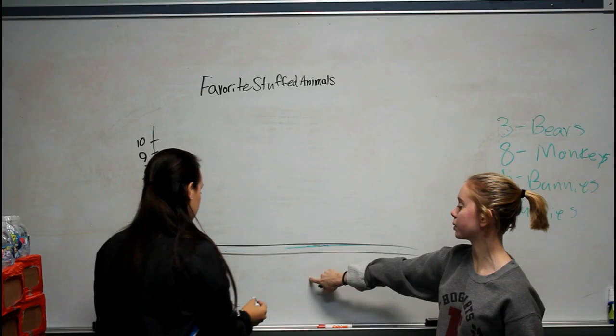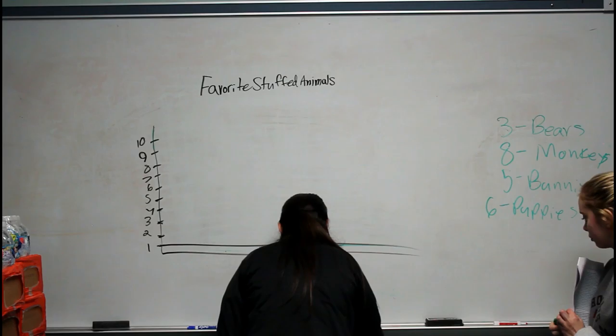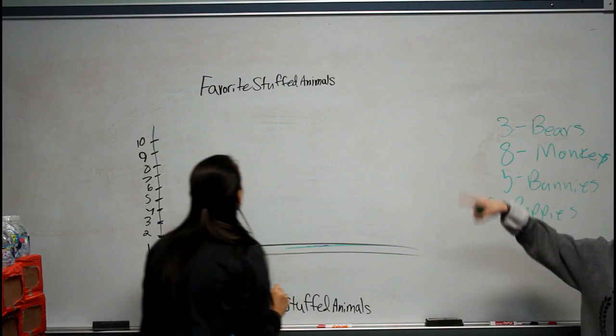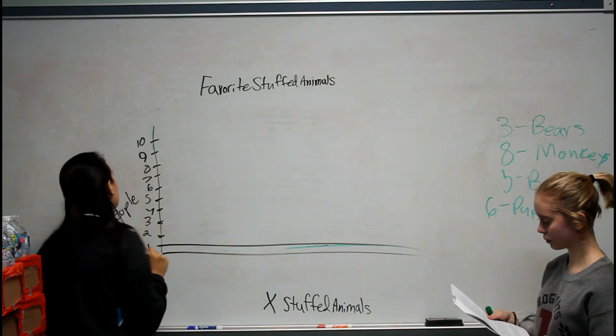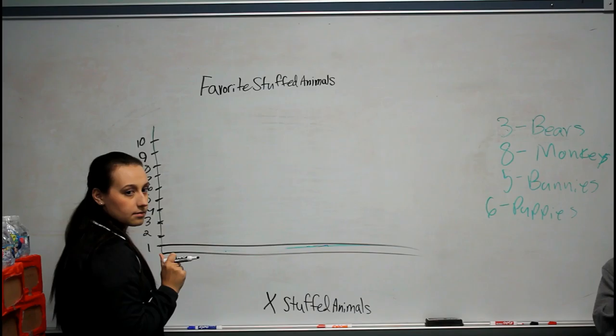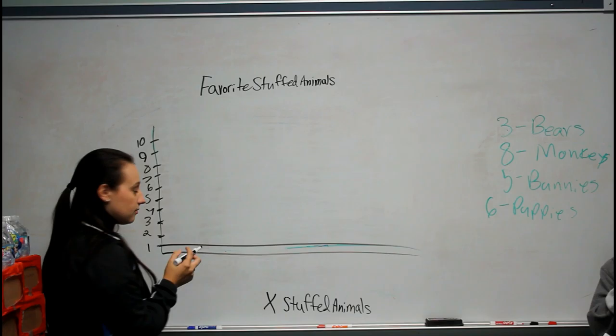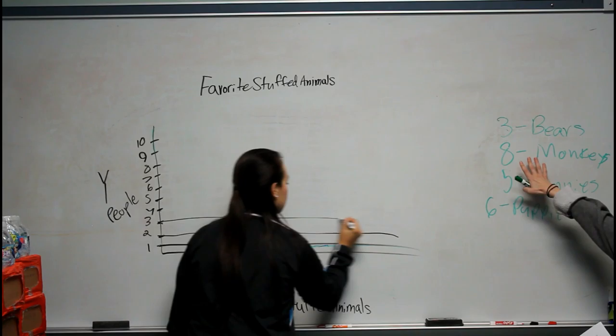What could be the name of our axis, Michaela? The X-axis — and what can we title it? Stuffed Animals. And Becky, what is the axis that goes up and down? The Y-axis. And what can we label it as? Let's do People. Now that we have our axes and labels, what can we do to make our bars more precise, Kristen? Draw lines all the way across, parallel to the X-axis, up to 8.